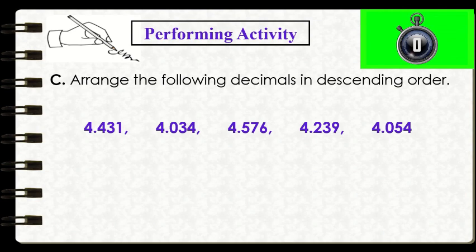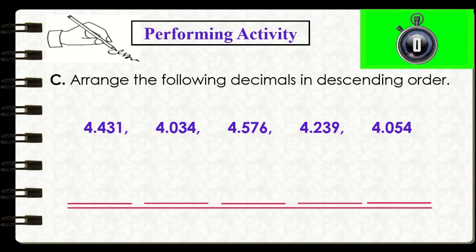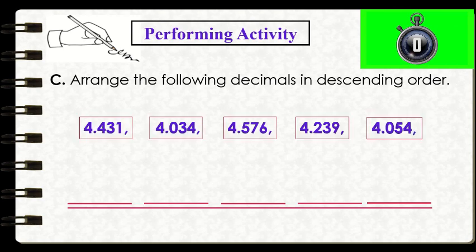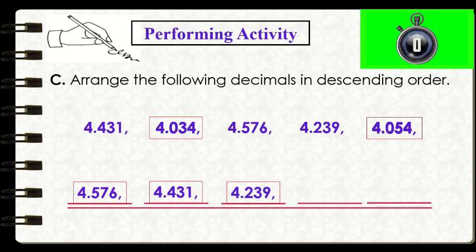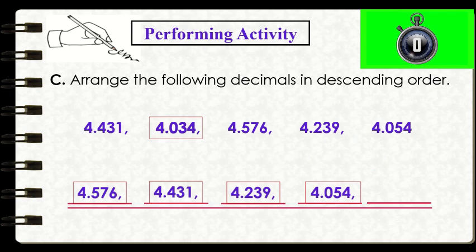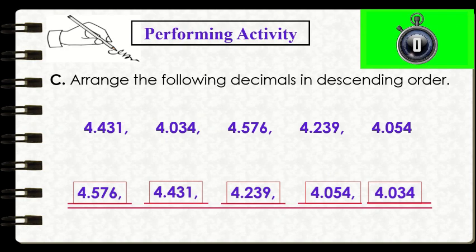Time's up. Let's check if your answers are correct. Arranged in descending order, the sequence is: 4 and 576 thousandths, 4 and 431 thousandths, 4 and 239 thousandths, 4 and 54 thousandths, and the least decimal number is 4 and 34 thousandths.